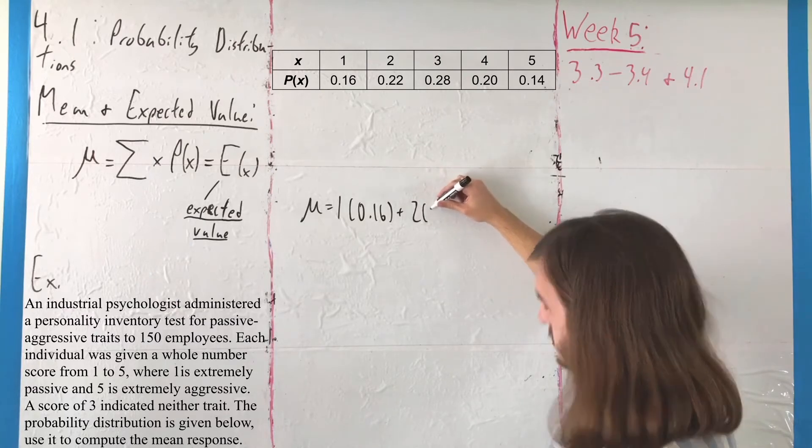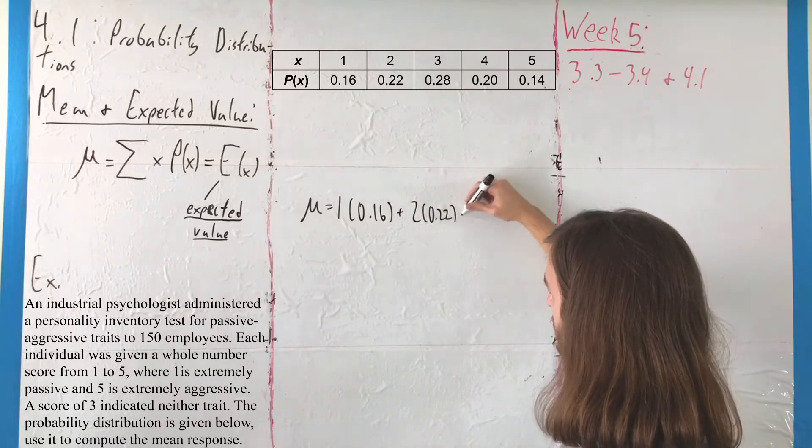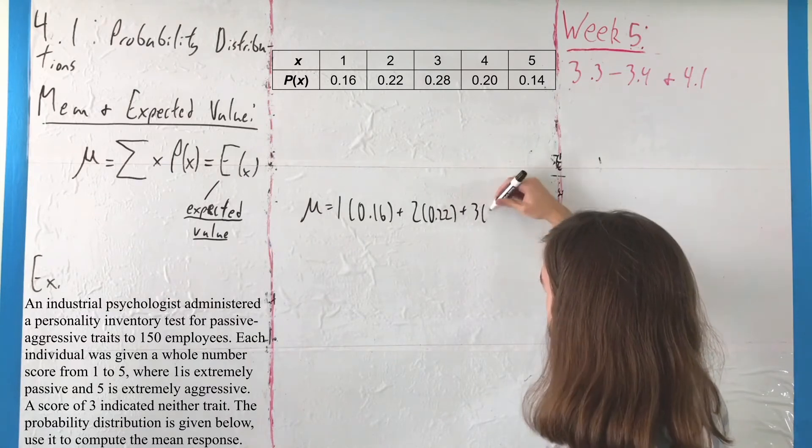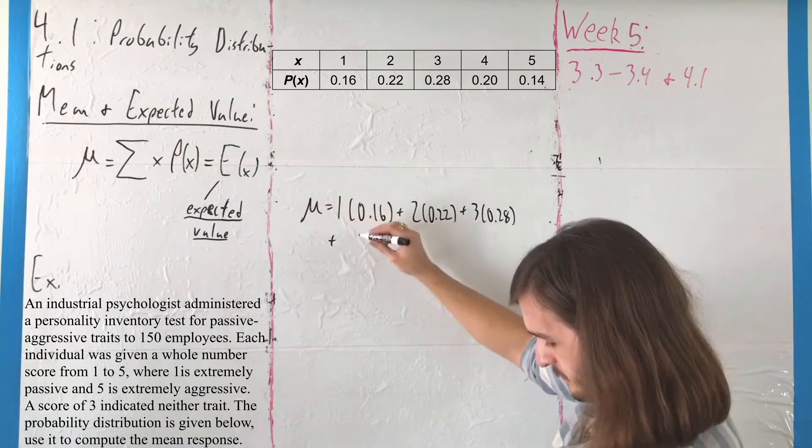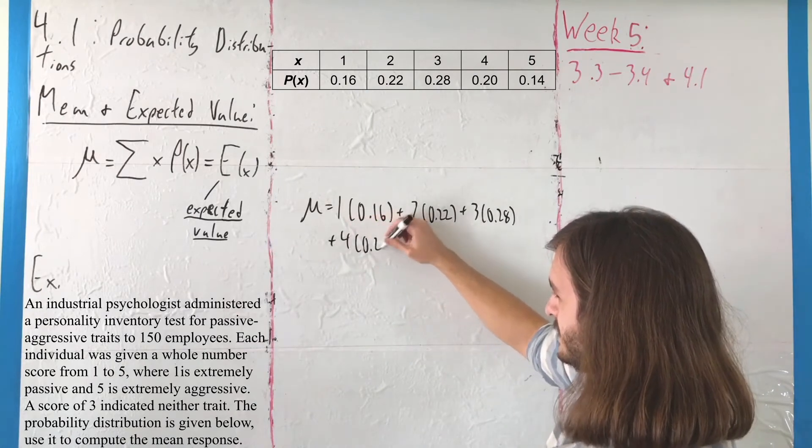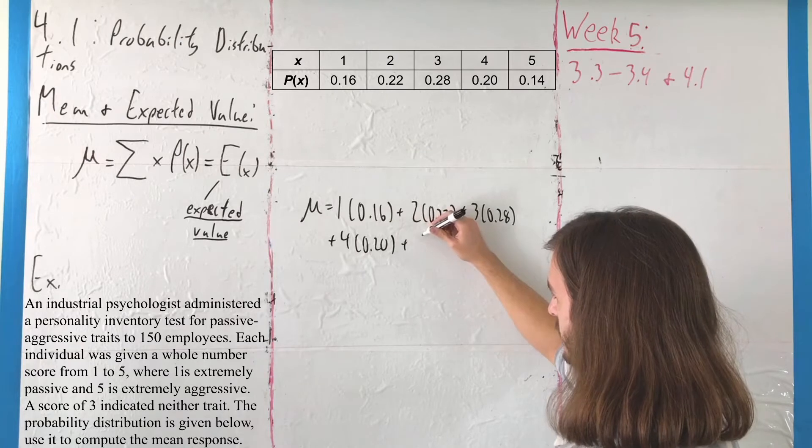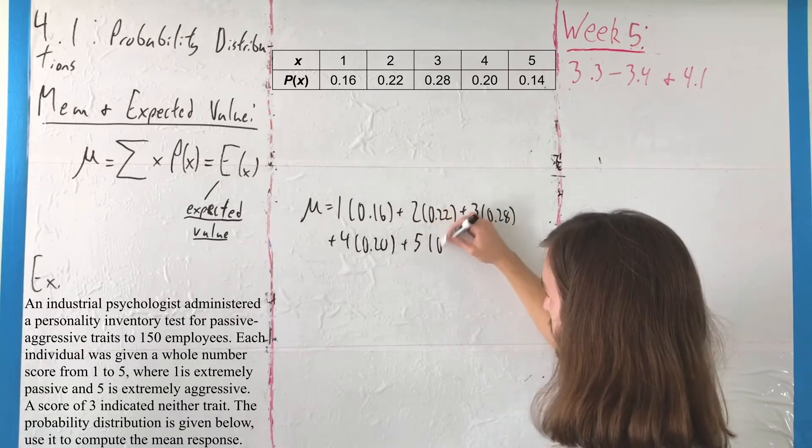So, 1 times 0.16, plus 2 times 0.22, plus 3 times 0.28, plus 4 times 0.20, plus 5 times 0.14.